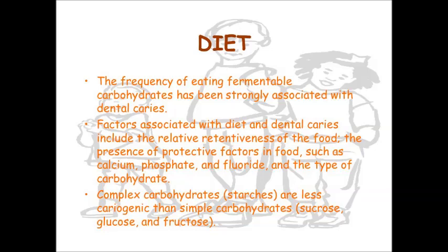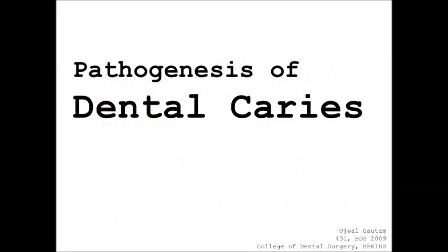Regarding the role of diet, the modern diet is less fibrous, soft, sticky, and mainly composed of refined carbohydrates. The frequency of eating fermentable carbohydrates has been strongly associated with dental caries. Factors associated with diet and dental caries include the relative retentiveness of the food, the presence of protective factors such as calcium, phosphate, and fluoride, and the type of carbohydrate. Complex carbohydrates such as starch are less cariogenic than simple carbohydrates such as sucrose, glucose, and fructose.